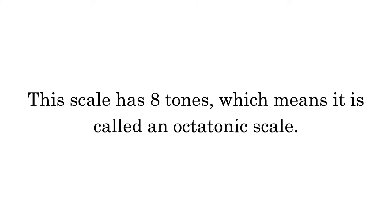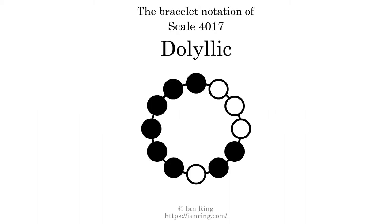This scale has 8 tones, which means it is called an octatonic scale. This is a bracelet notation diagram of scale 4017. The shaded circles represent tones that appear in the scale, and they are read clockwise, starting at the top.